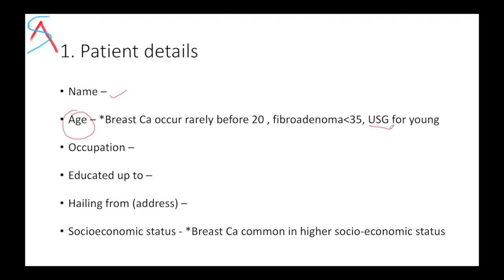For a young female, ultrasound USG is preferred because breast tissue is hypertense so malignancy will appear as hypotense. For older women, mammography is preferred. We also have to ask about occupation — if the lady has any exposure to radiation, which can cause breast carcinoma, that's a risk factor. Ask about education and socioeconomic status, as breast carcinoma is common in higher socioeconomic status.